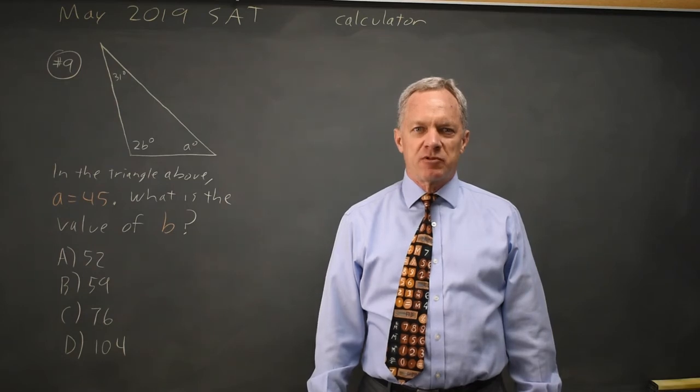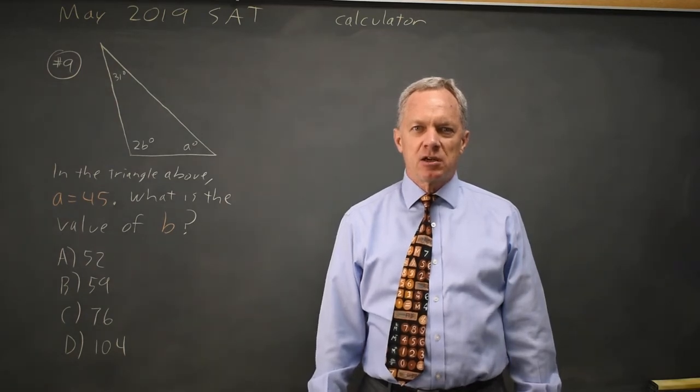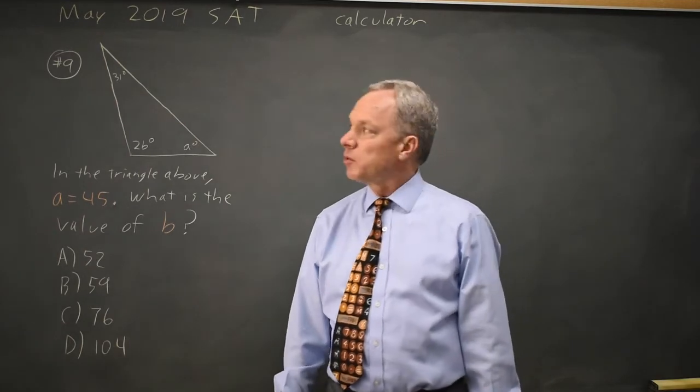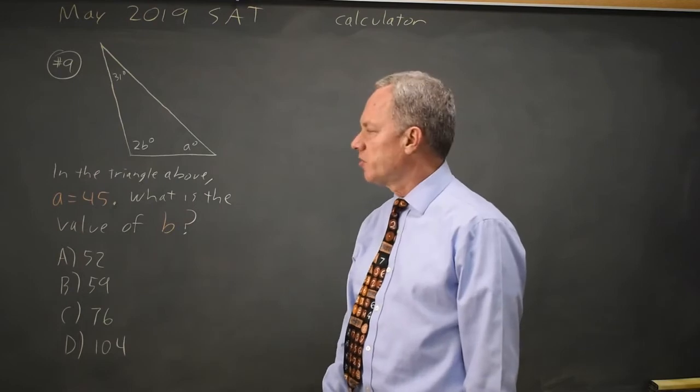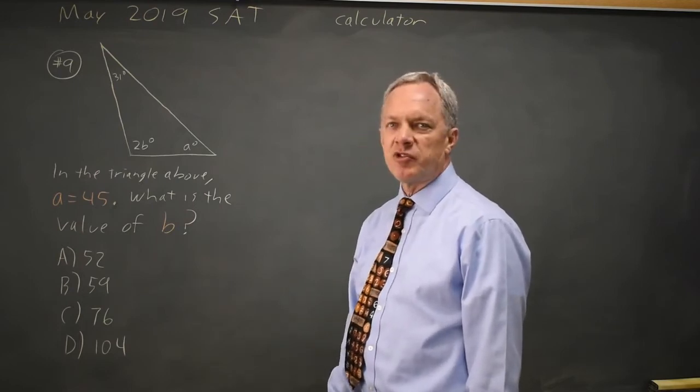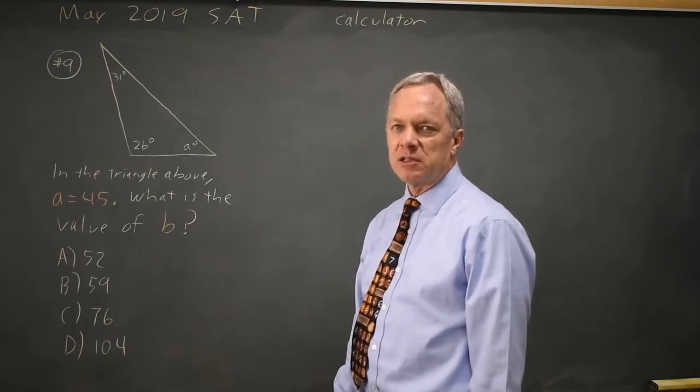This is calculator question number 9 for the May 2019 SAT. College Board gives us a triangle where one angle is 31 degrees, the second angle is labeled as A, but they tell us that A is 45, and they ask for the value of B where the third angle is 2B.